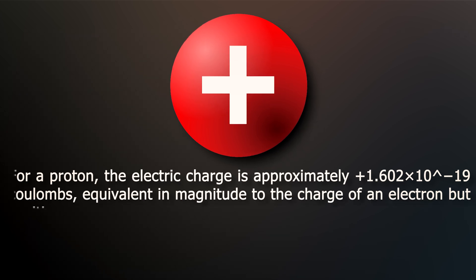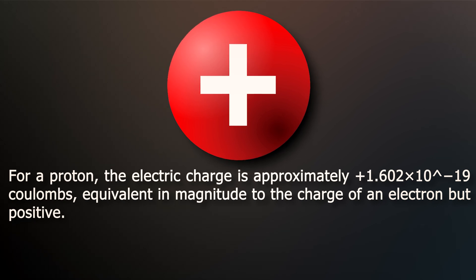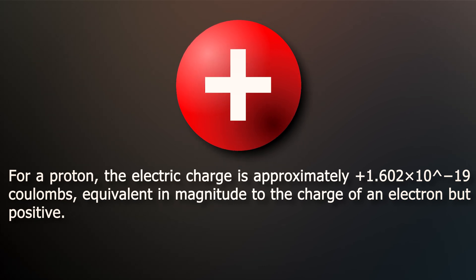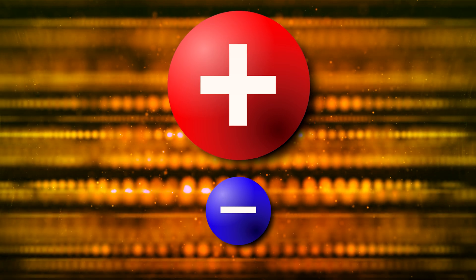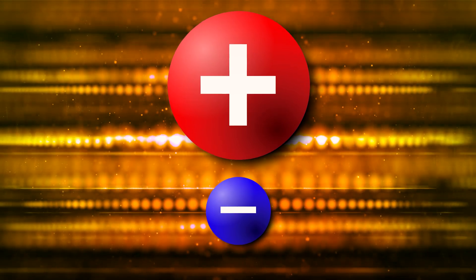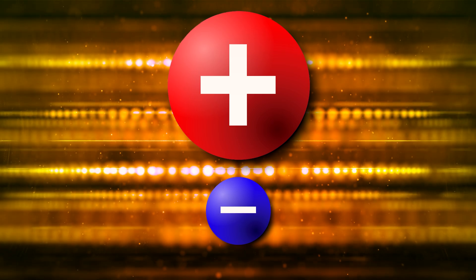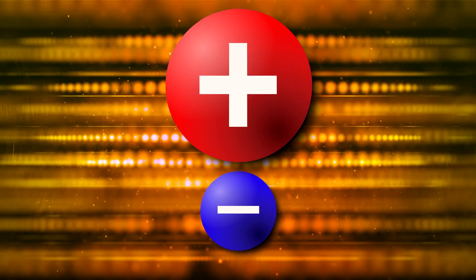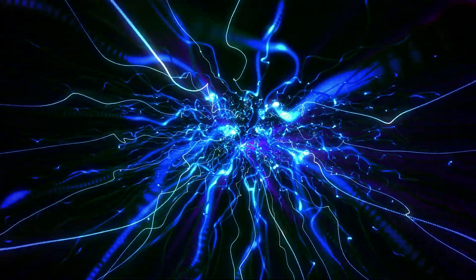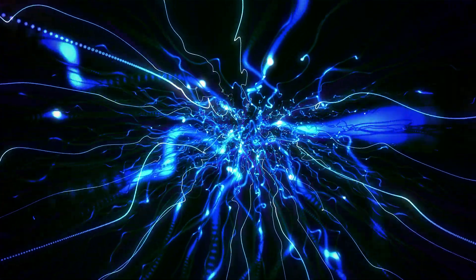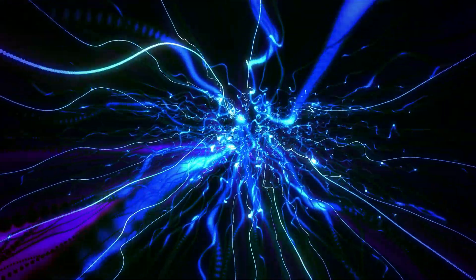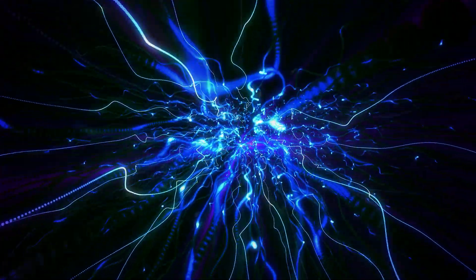For a proton, the electric charge is approximately plus 1.602 times 10 to the minus 19 coulombs, equivalent in magnitude to the charge of an electron but positive. The charges of these particles are not continuous but exist in specific quantized values and any change in charge occurs in multiples of E. This quantization of electric charge is a fundamental concept in physics and is a cornerstone of our understanding of the atomic and sub-atomic world.